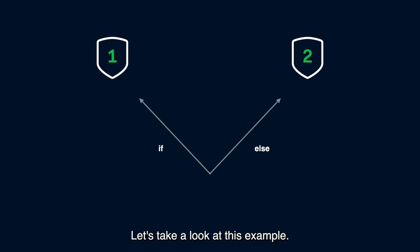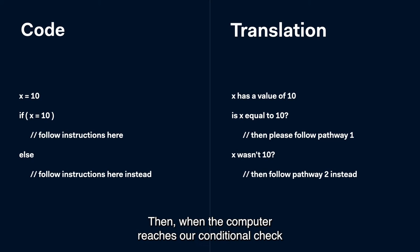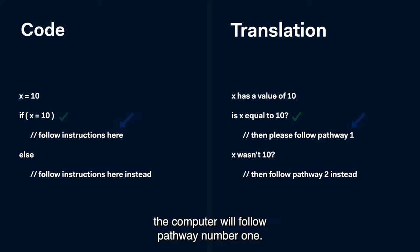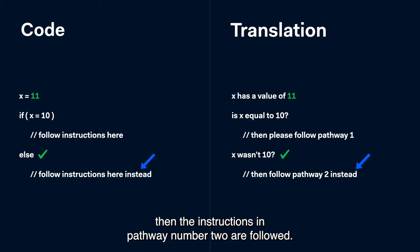Let's take a look at this example. We tell the computer that x is 10. Then, when the computer reaches our conditional check asking if x is 10, the computer will follow pathway number one. If we run the same program but change x to 11, then the instructions in pathway number two are followed.